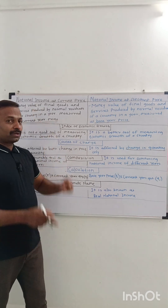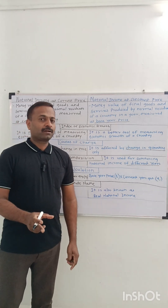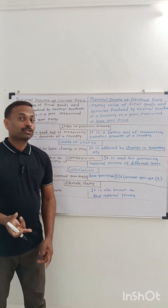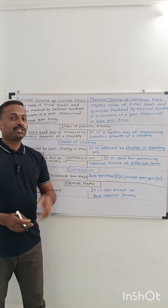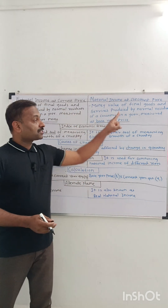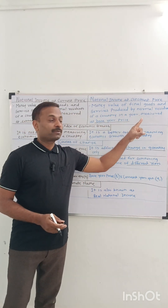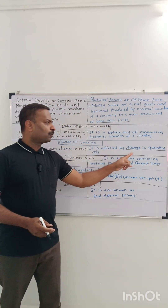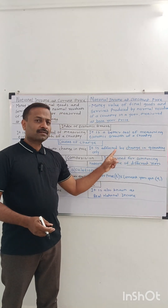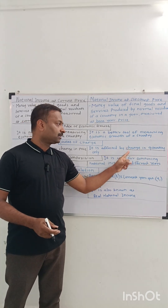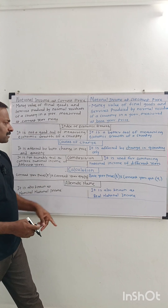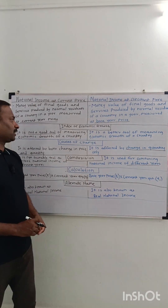Next: causes of change. National income at current year prices can change because of two reasons — change in price and change in quantity. But national income at constant year prices is affected by only change in quantity; it is not affected by change in price. It is only changed by the change in quantity.